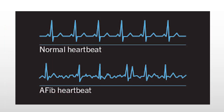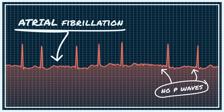The normal heartbeat shows a P wave followed by a QRS complex. However, in atrial fibrillation there is no P wave, and the irregularity is itself not regular. Here is another picture of an atrial fibrillation rhythm strip for comparison.